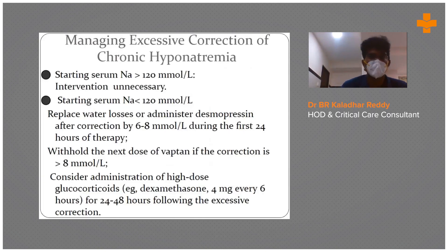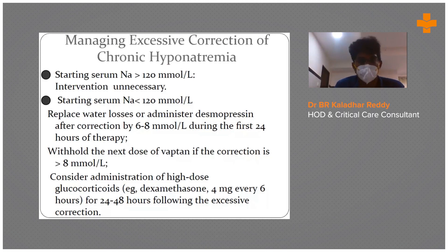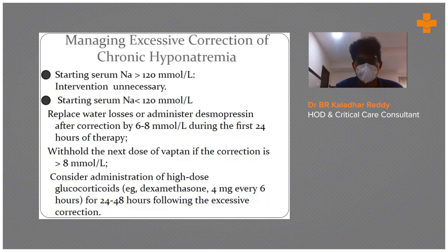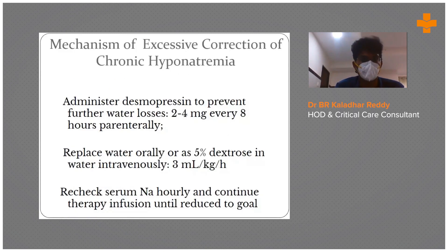If you have corrected excessively: if serum sodium is more than 120, intervene; if less than 120, replace water losses. Administer desmopressin — seen most often in cases with a low ADH component, cerebral salt wasting syndrome, or CNS tumors corrected with 3% NS. Withhold the next dose of vaptans, since vaptans increase sodium. Consider administration of high-dose glucose or steroids for 24 to 48 hours following excessive correction. Give desmopressin to prevent further water losses, replace water orally or with 5% dextrose in water intravenously, recheck sodium hourly, and continue until sodium is reduced to goal.